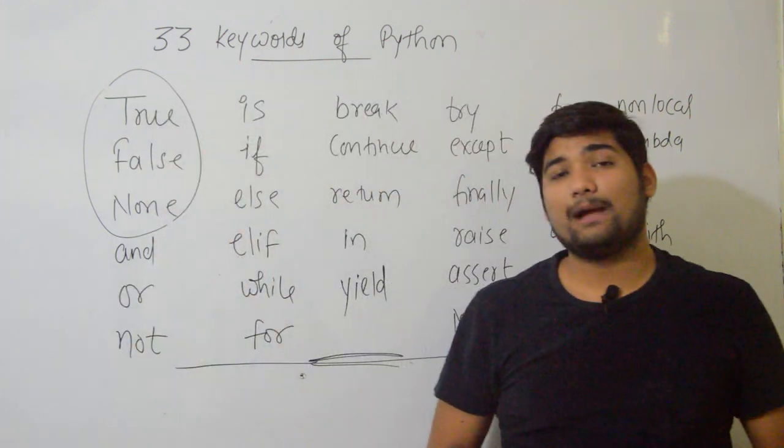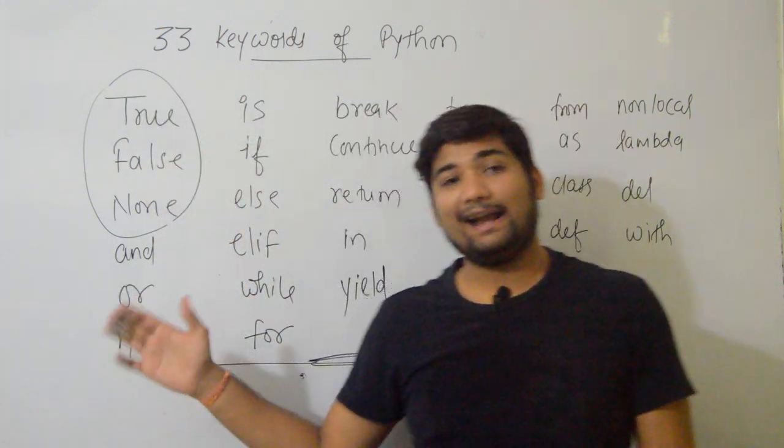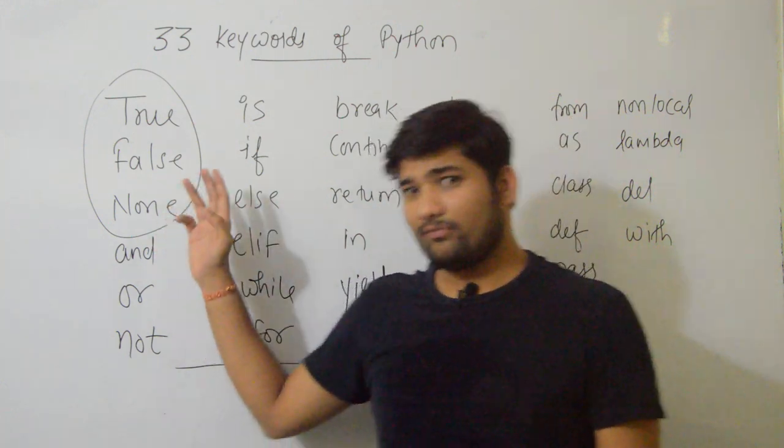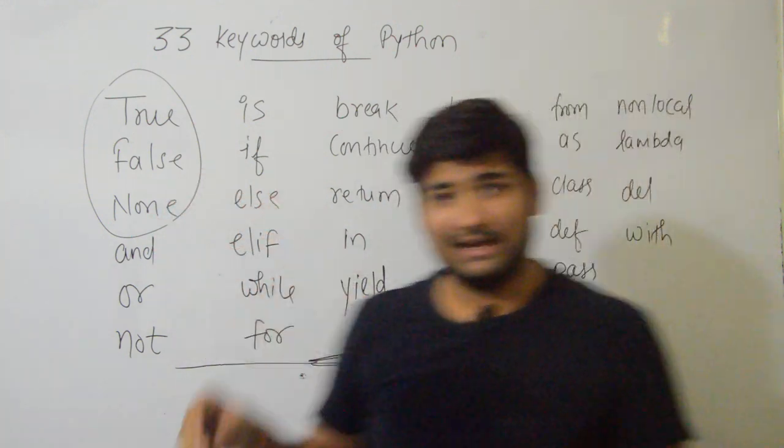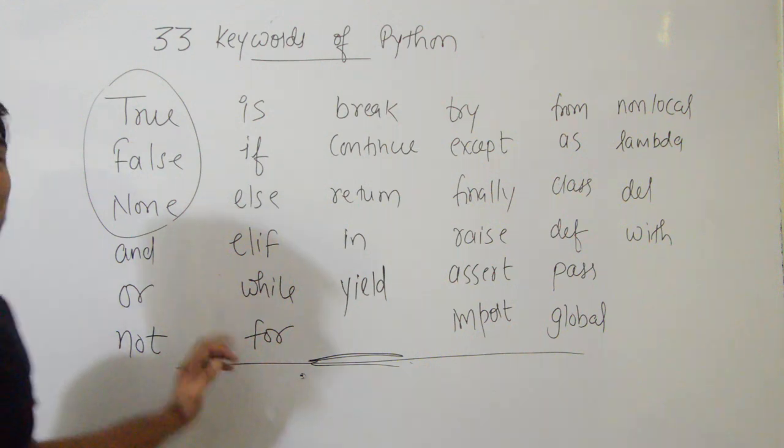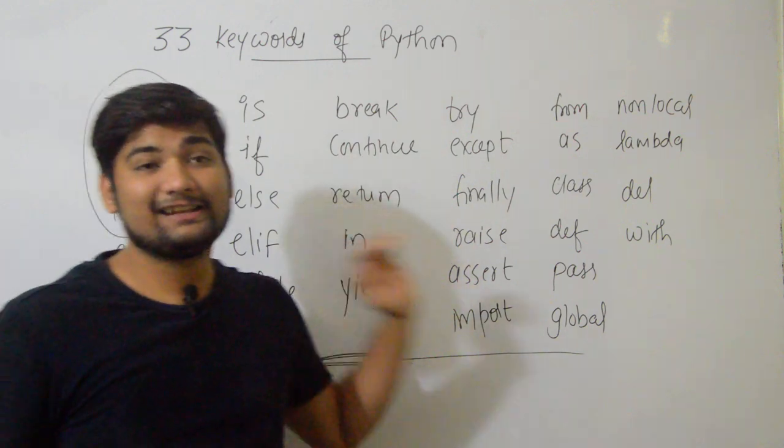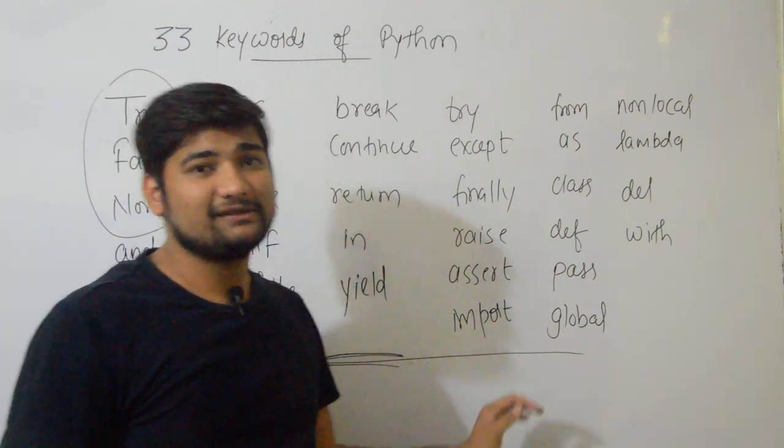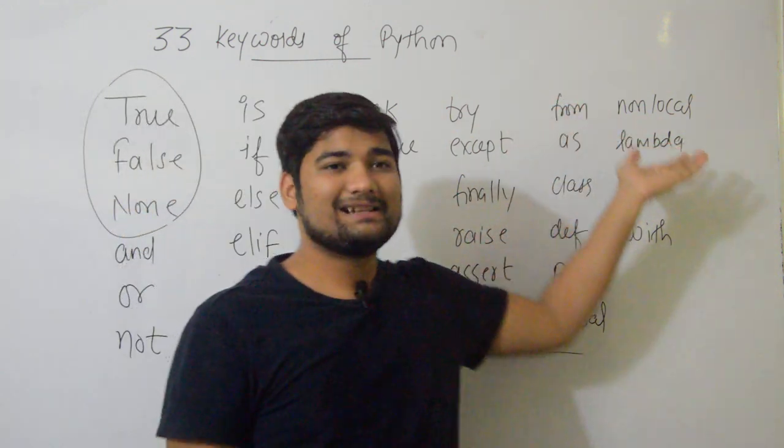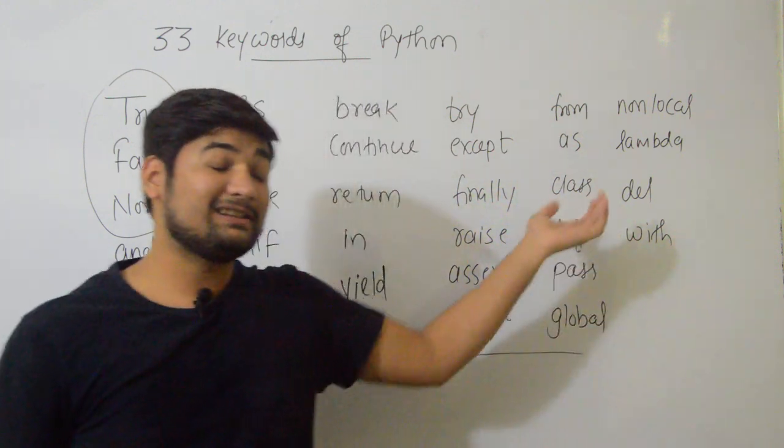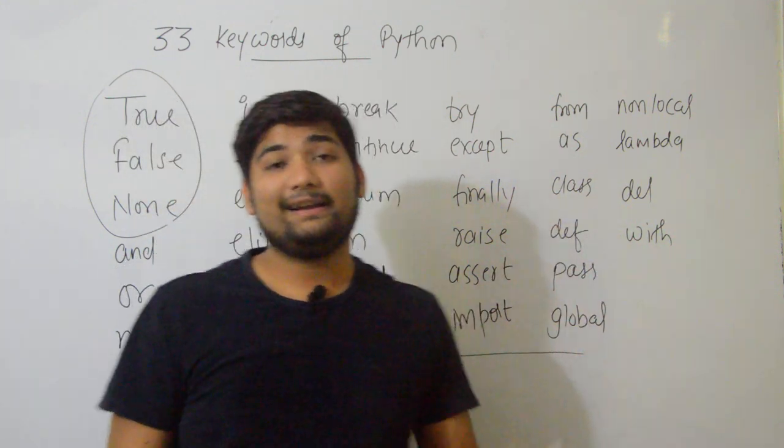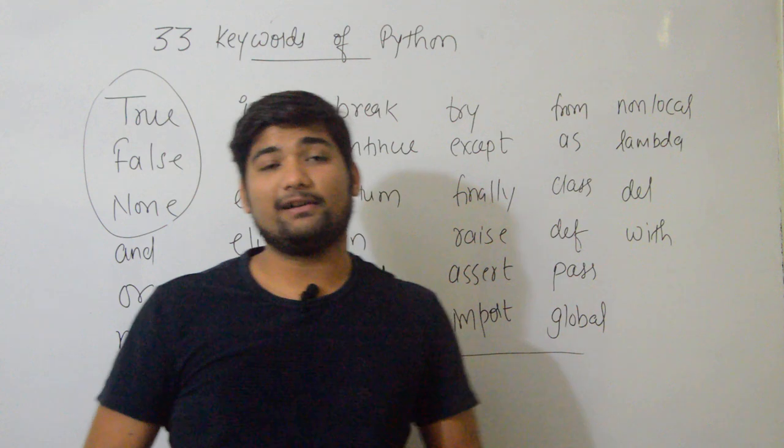These are the 33 keywords: True, False, None, And, Or, Not, If, Else, Elif, While, For, Break, Continue, Return, In, Yield, Try, Accept, Finally, Raise, Assert, Import, From, As, Class, Def, Pass, Global, Non-Local, Lambda, Del, and With. These are 33 keywords from Python.